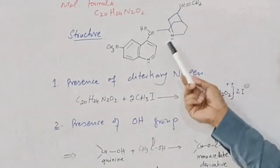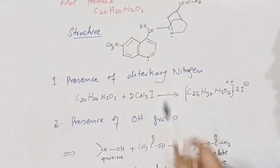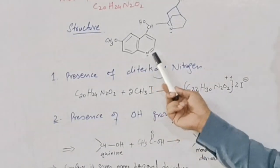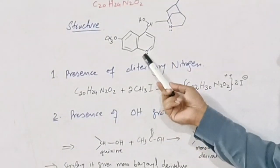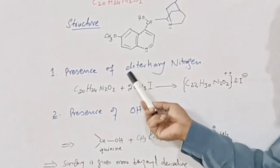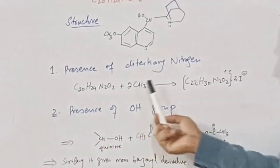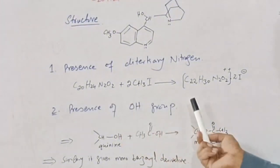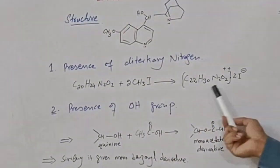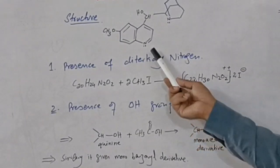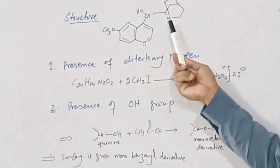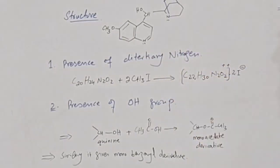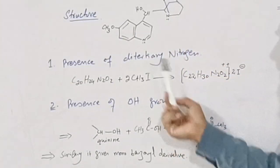As this structure shows, there are two nitrogen atoms and both nitrogen atoms are in tertiary state. To prove that the nitrogen atoms are di-tertiary: when quinine is treated with methyl iodide, it adds two molecules to form a quaternary ammonium salt. This shows that one methyl iodide is added at each nitrogen, confirming that both nitrogen atoms present in this molecule are in a di-tertiary state.